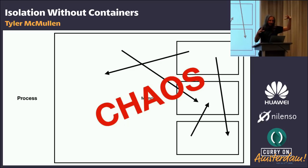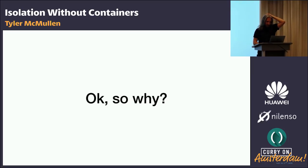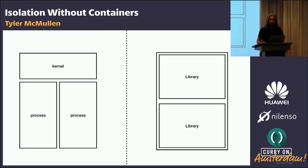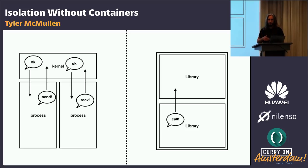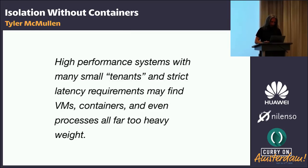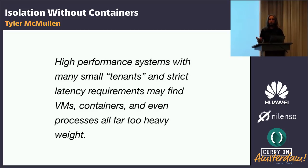If you load a dynamic library into your existing running program, the fault domain of that dynamic library is the entire process. So why do people use this despite making nearly zero safety guarantees? The entire reason is performance. If you wanted to spin up your plugins as a separate process, you'd need to send a message via the kernel, and the other process would receive and respond — versus just writing directly into its memory space. Despite syscalls being relatively fast in human terms, they're not nearly as fast as just writing memory. High-performance systems with many small tenants and strict latency requirements may find that VMs, containers, and even processes are way too heavyweight.